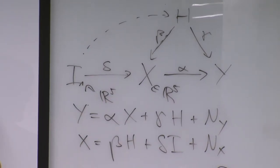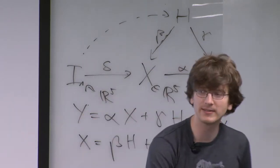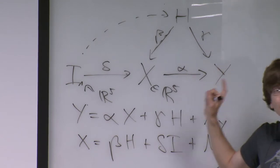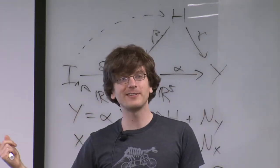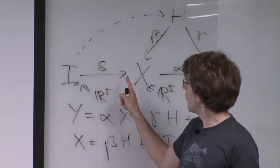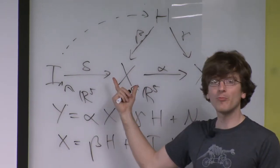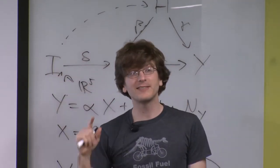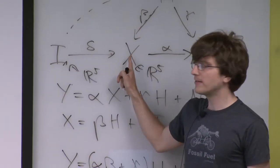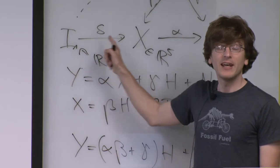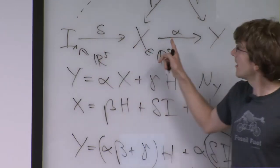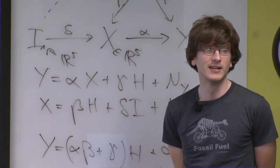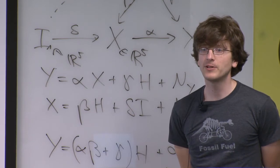These instrumental variables tell you that identification is not always related to adjustment - sometimes it comes from having small model classes. This is what we'll see in causal structure learning as well. In some situations it really helps if the functions in the structural equations are simple - here, linear functions help for identification.